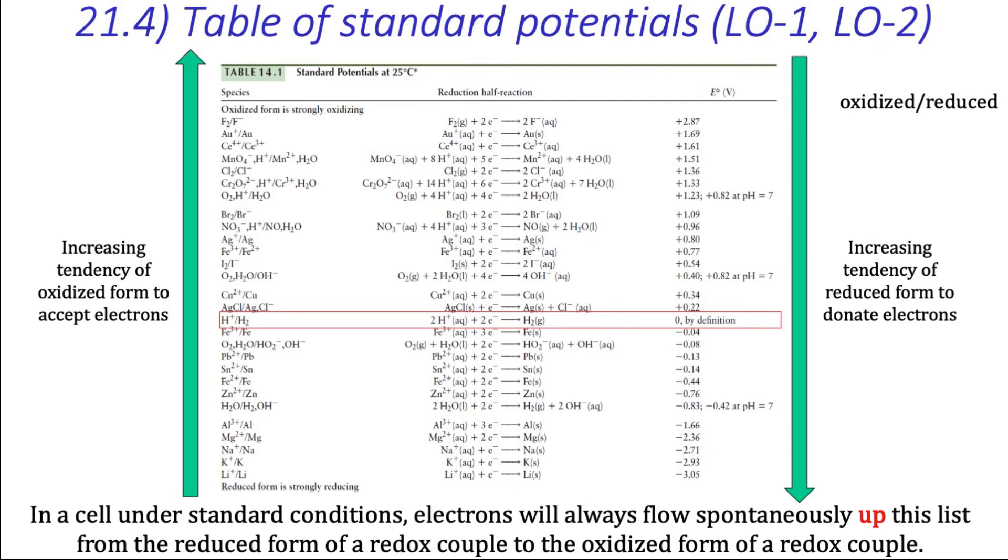So in a galvanic cell consisting of two of the half-cells in this list, the one lower down the list will generally serve as the anode, while the one higher up in the list will generally serve as the cathode. In other words, electrons always flow up the list.